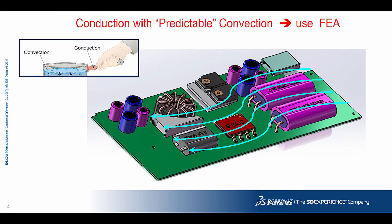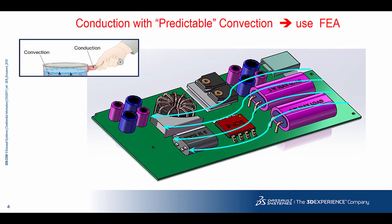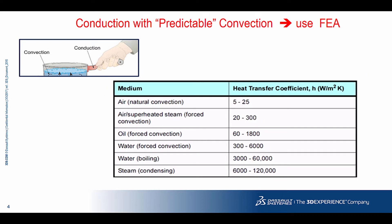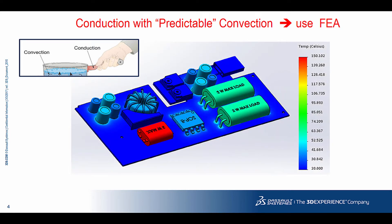If analyzing conduction and predictable convection, then FEA does an acceptable job. Predictable convection means forced convection, such as from a fan or a blower, or anything that creates airflow when you know the convection coefficient — i.e., predictable. Many engineers apply a constant convection coefficient to all the exposed surfaces of the component. You can use coefficients found in reference tables or calculate one by hand. In this case, you can use FEA.